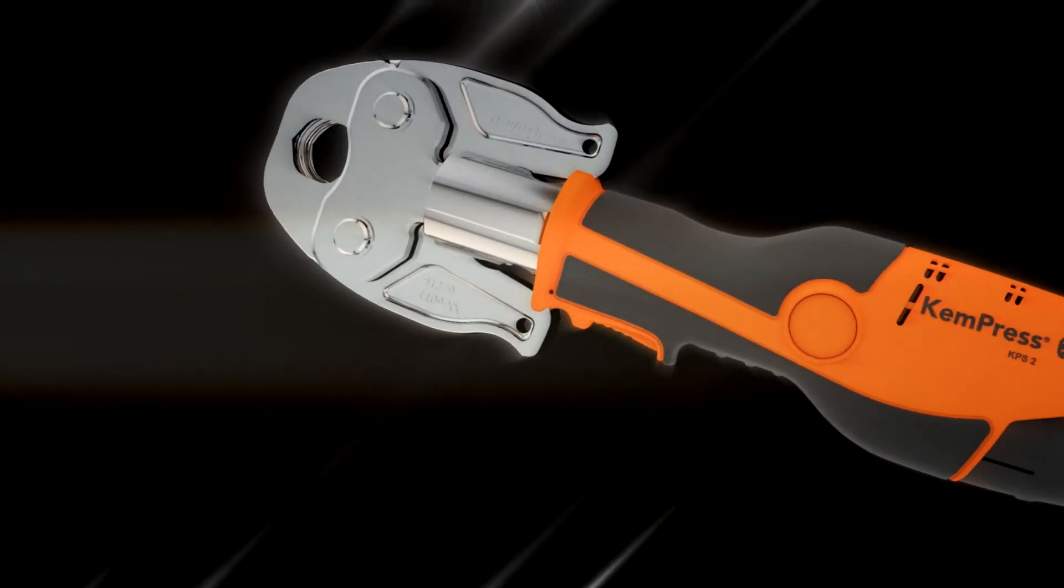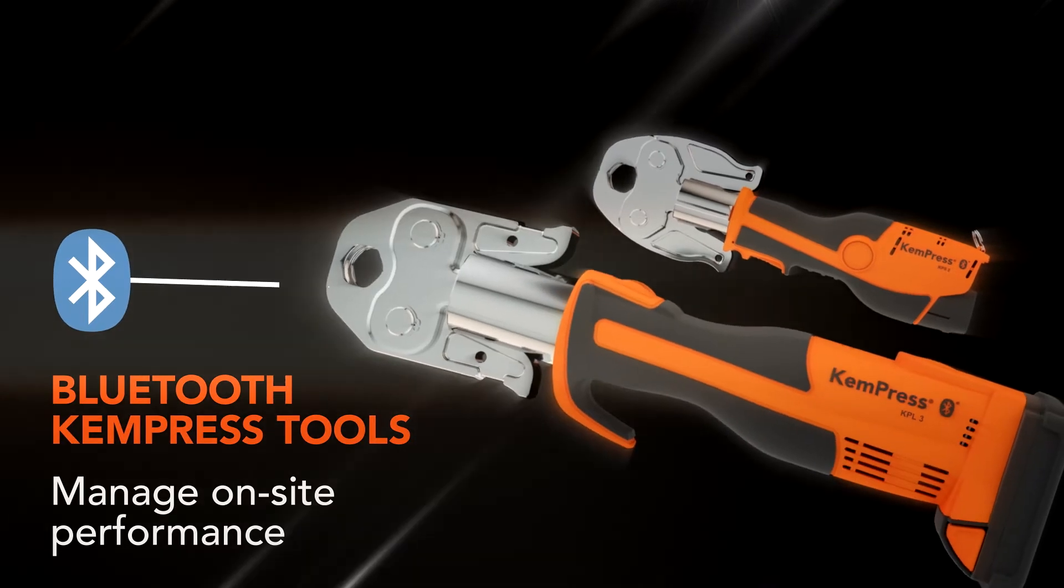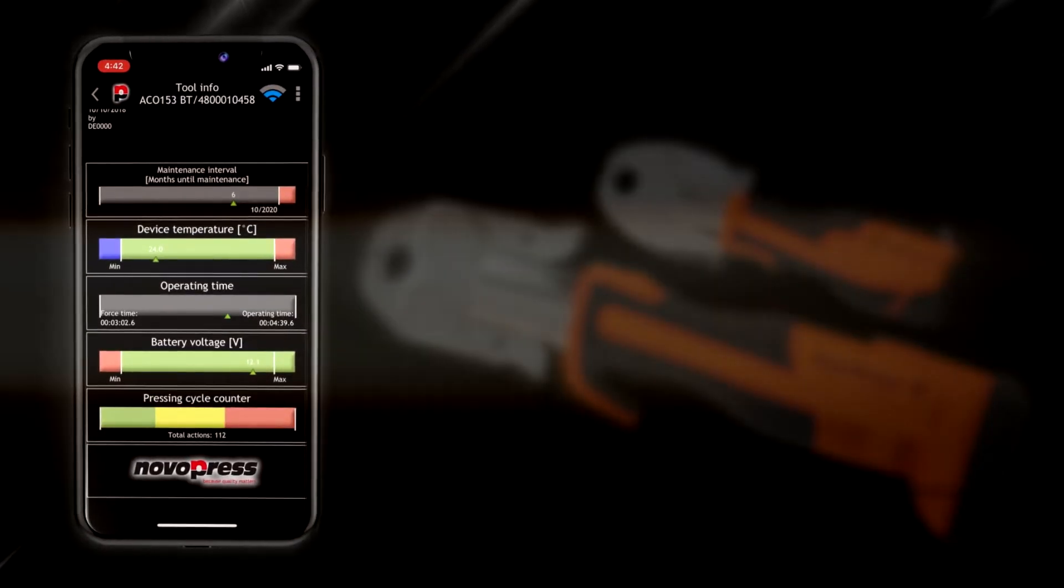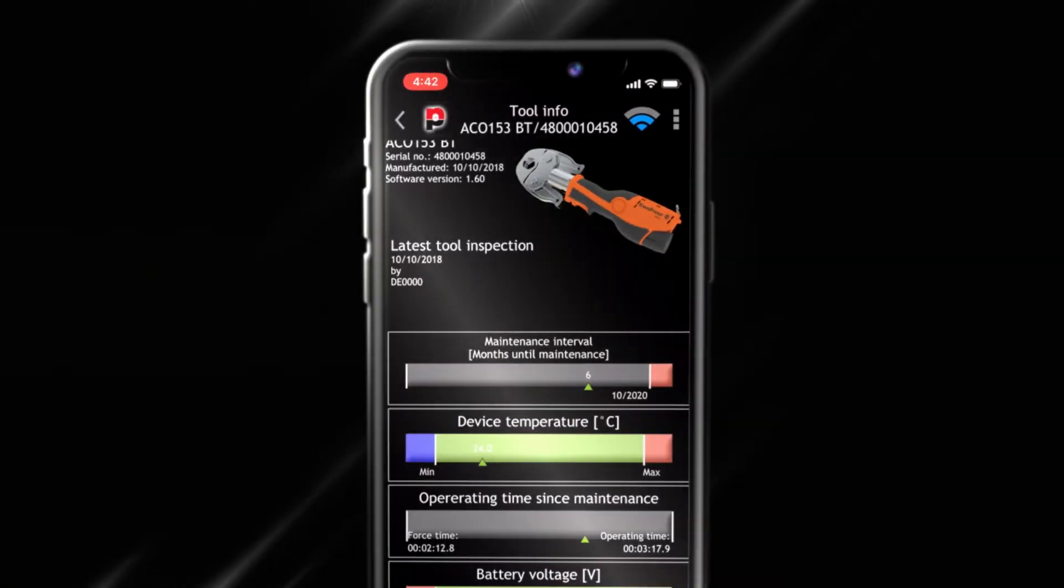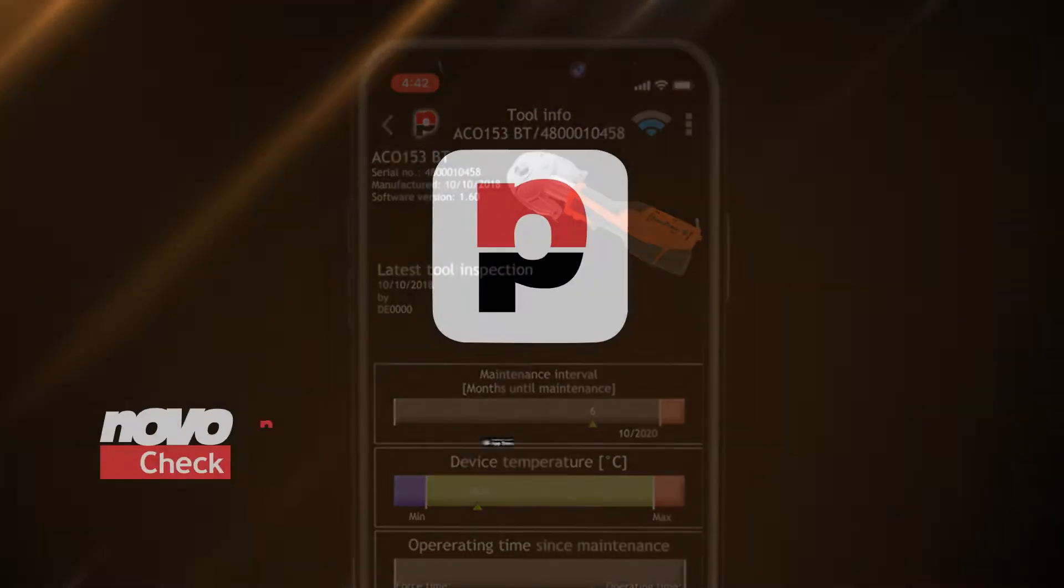Kempress KPS2 and KPL3 tools are equipped with Bluetooth technology so you can monitor on-site job performance, generate site reports showing press completion, and track and control tool condition from your smart device and the Novo check app.